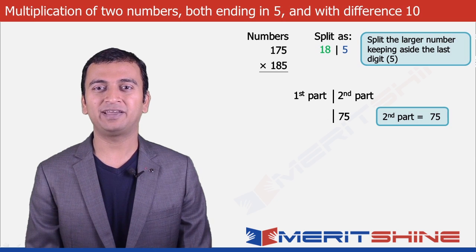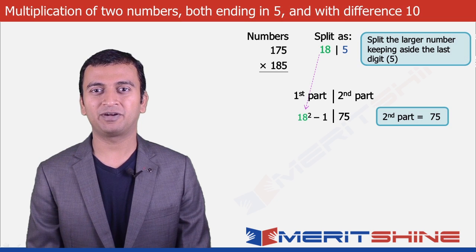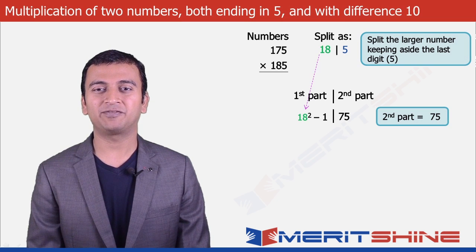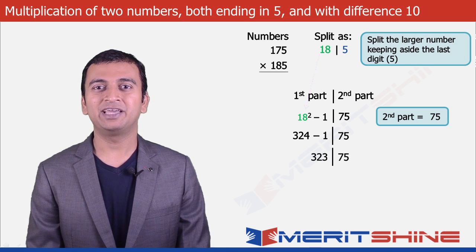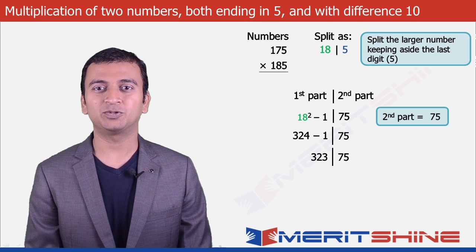So in our case, 185 will become 18. We will find its square and subtract 1 from it which will give us 324 minus 1, 323. We can club these two parts and get our final answer as 32375.